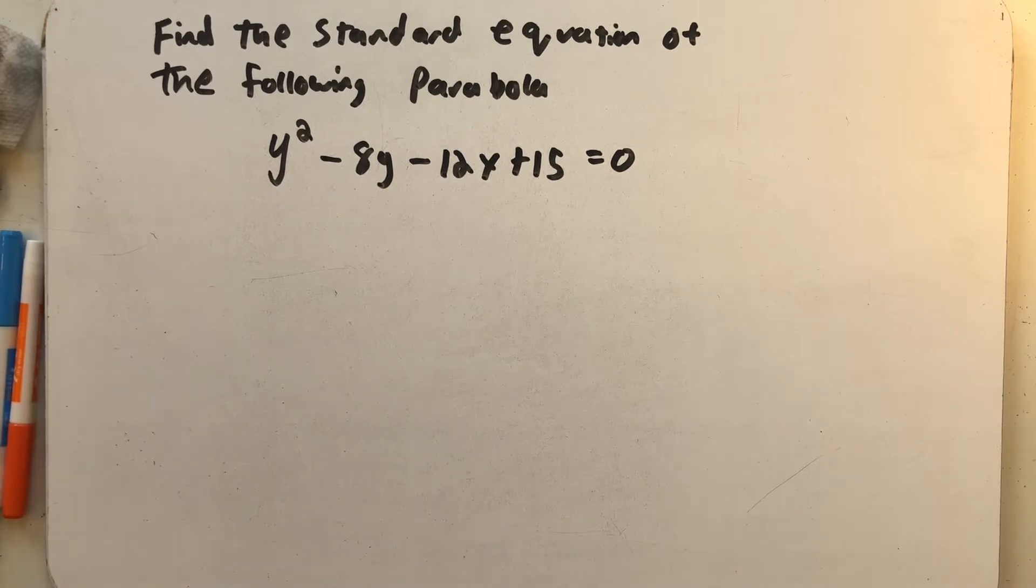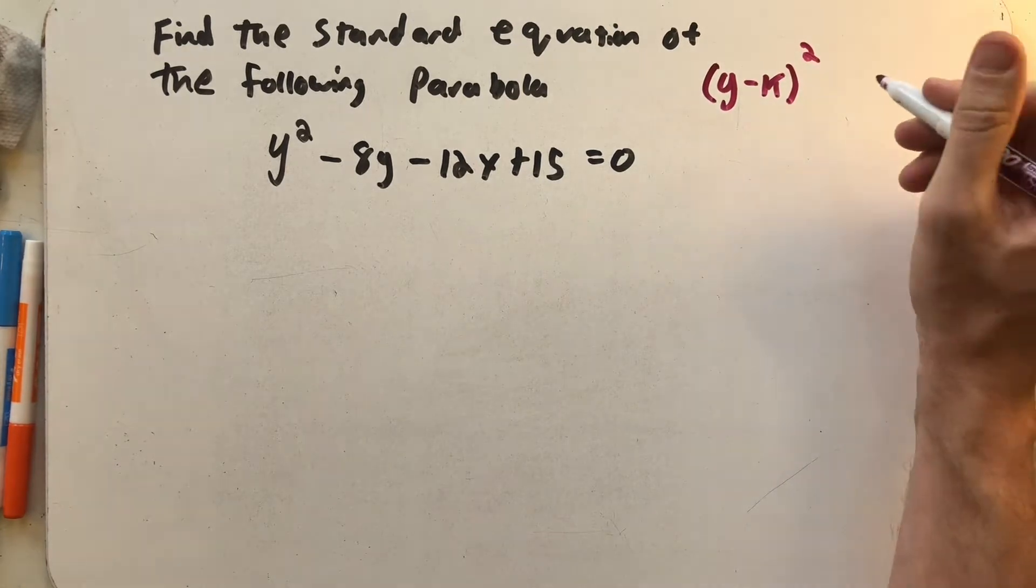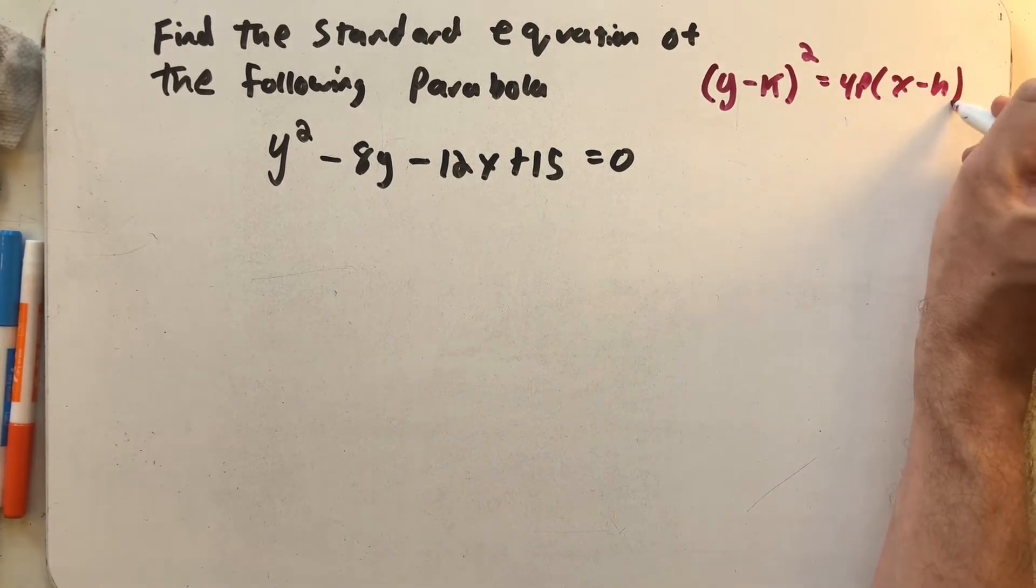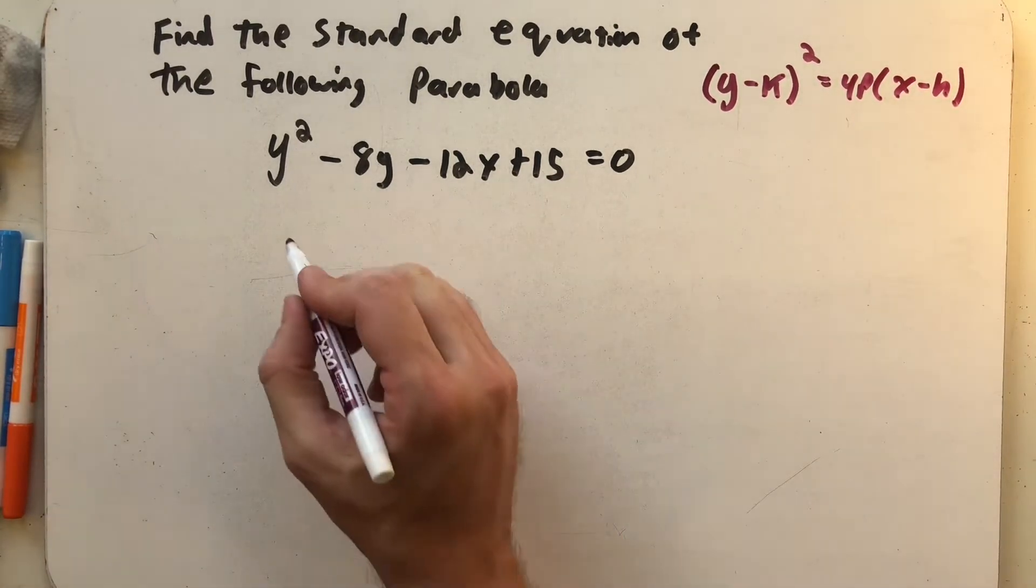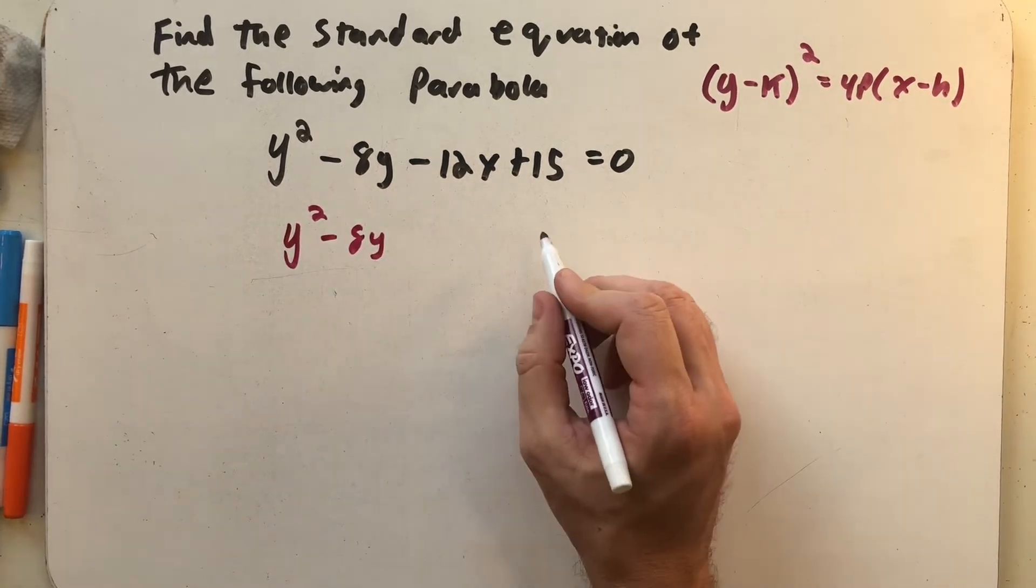Right away with that y being squared, I know my standard equation that I'm trying to write is (y - k)² = 4p(x - h). So I'm going to get the y's on one side, get the x's on one side, because that's how that equation is structured.